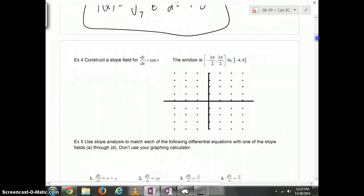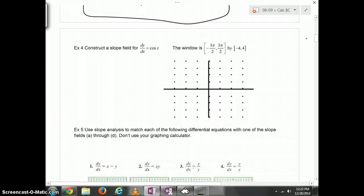Slope fields. A slope field is a way to represent tangent line slopes on a little bit of a chart. We have a differential equation that dy dx is equal to the cosine of x. We're going to have a window from negative 3 pi over 2 to positive 3 pi over 2. In our y value, it looks like we're going from negative 4 to positive 4. It looks like maybe we'll have a 0 here, maybe pi over 2, pi, and 3 pi over 2 going in a negative direction. We could have negative pi over 2, negative...